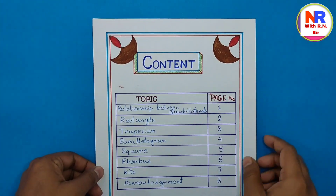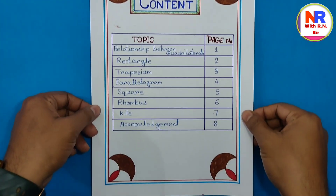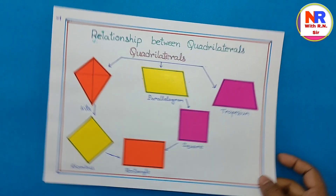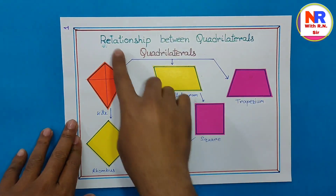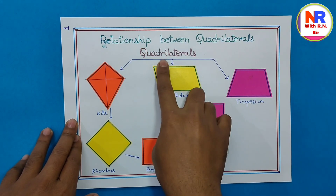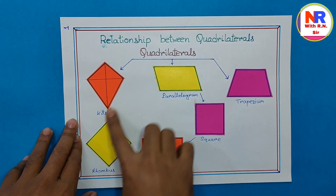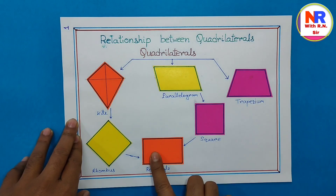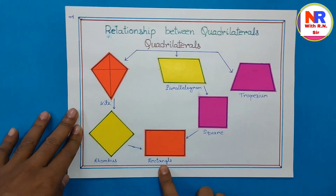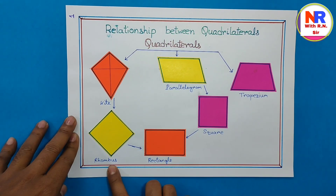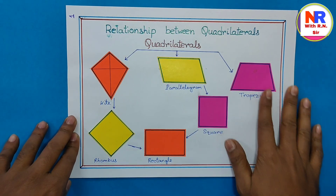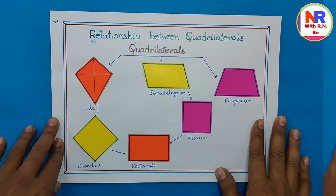This is the content of the project, page number 1. You can see the relationship between the quadrilaterals. Here is a quadrilateral, and these are its types: parallelogram, trapezium, square, rectangle, rhombus, and kite. So these are the types of quadrilaterals.